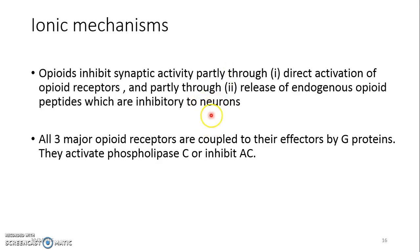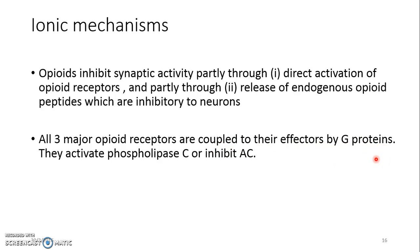By doing both of these, opioids lead to inhibition of synaptic activity. All three major opiate receptors — mu, delta, and kappa — are coupled to their effectors by G proteins. They can activate phospholipase C or they will inhibit adenylyl cyclase.